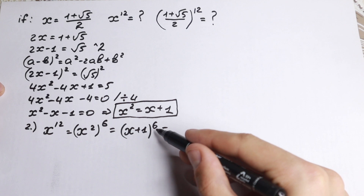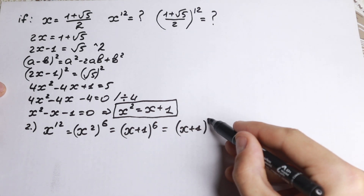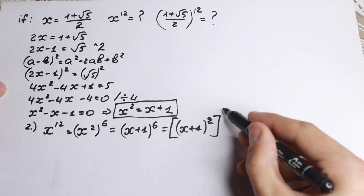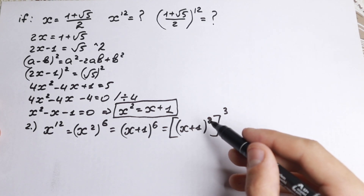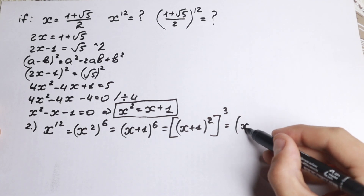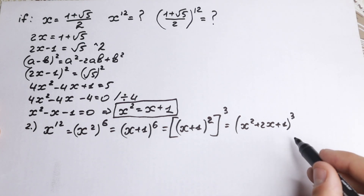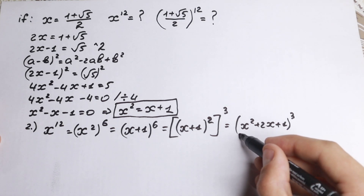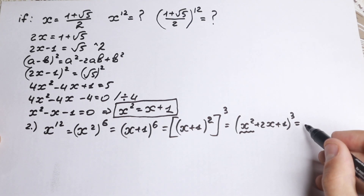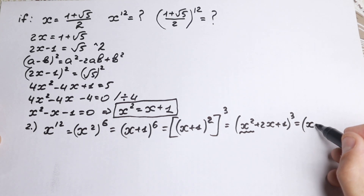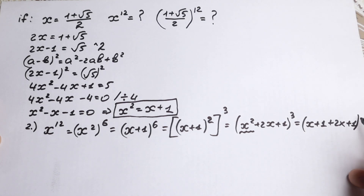We don't need to raise to the sixth power directly — we can write (x plus 1) to the sixth as (x plus 1) squared, all raised to the third power. Now (x plus 1) squared equals x squared plus 2x plus 1. We raise this to the third power. Looking closely at the x squared term, we can write it as x plus 1, since x squared equals x plus 1. So we have (x plus 1 plus 2x plus 1), which simplifies inside the bracket.